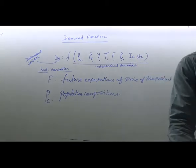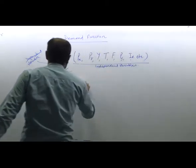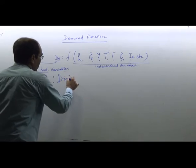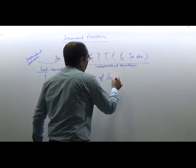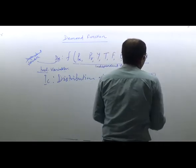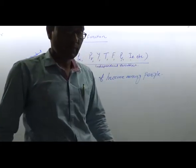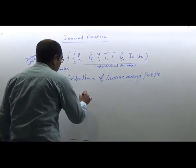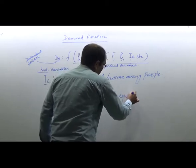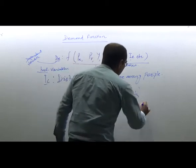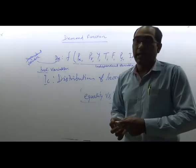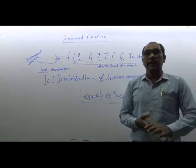Next is income distribution. On the basis of distribution of income, our society may be equal or unequal — equality versus inequality. In our country, income is unequally distributed, and due to this inequality, a wide variety of products are demanded in the market.